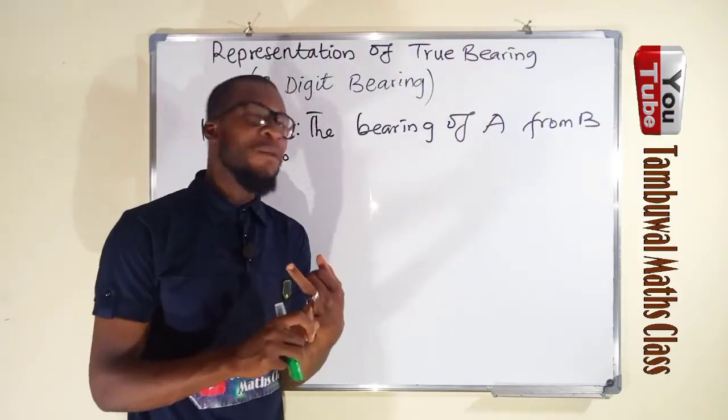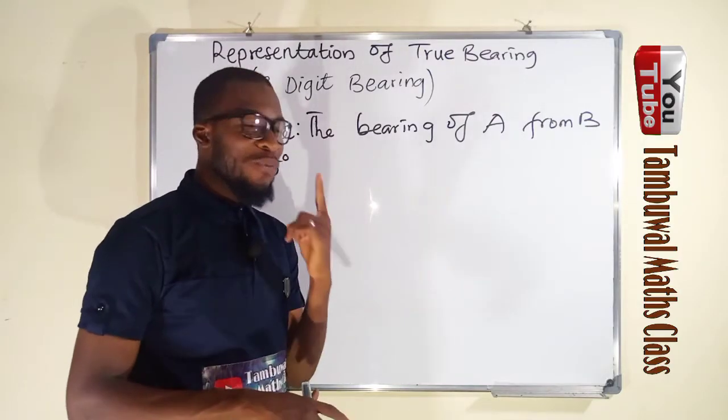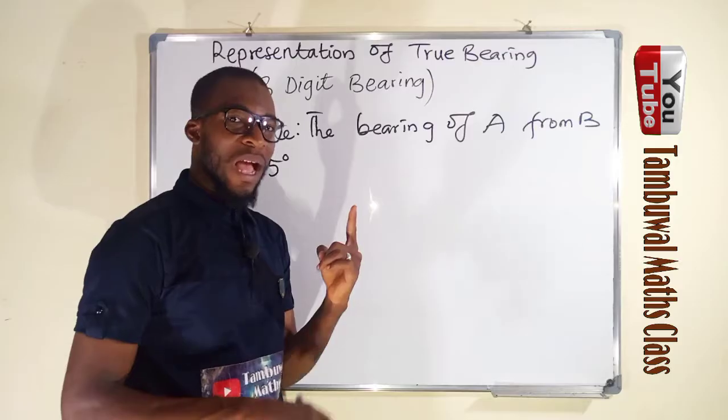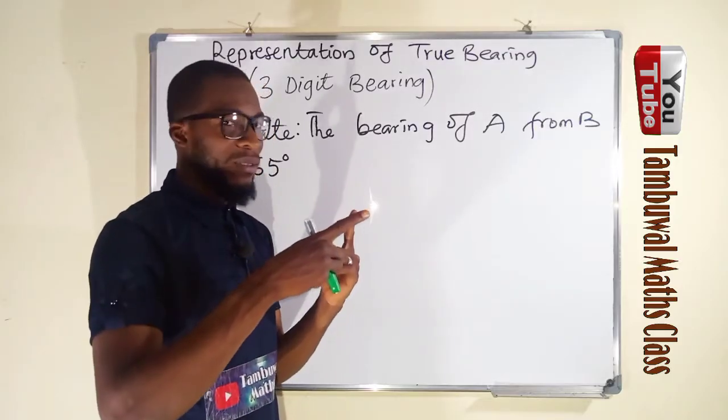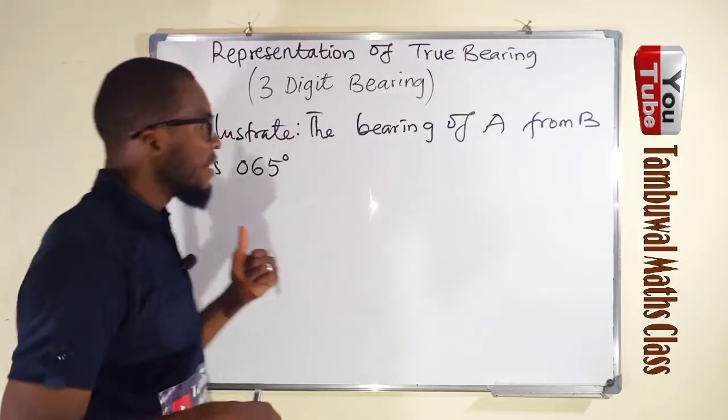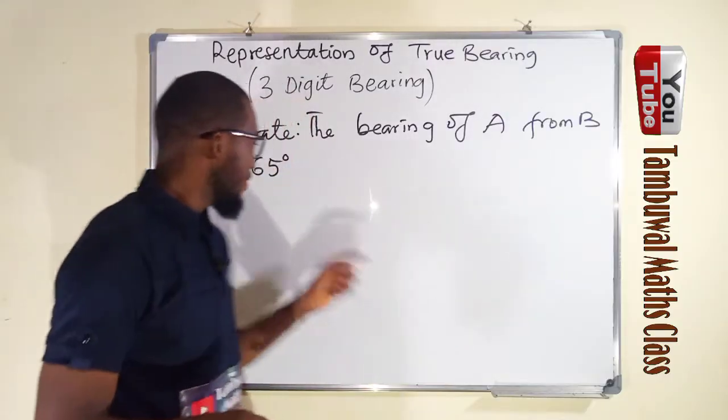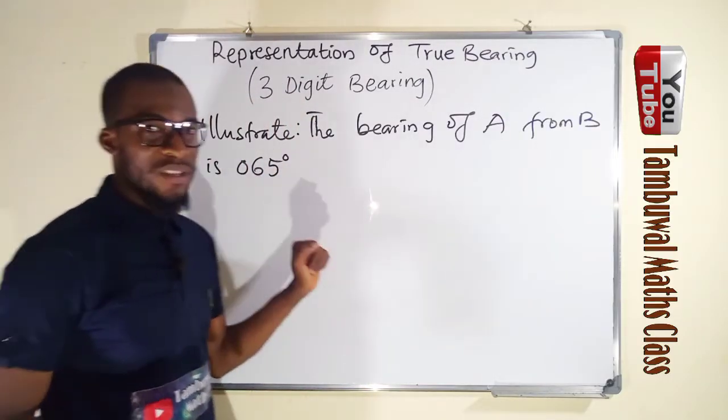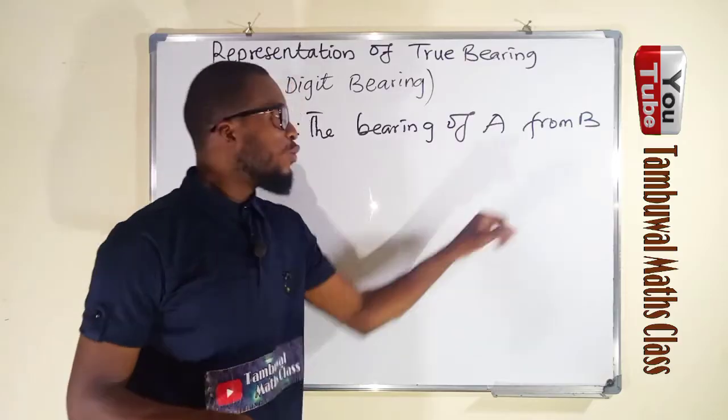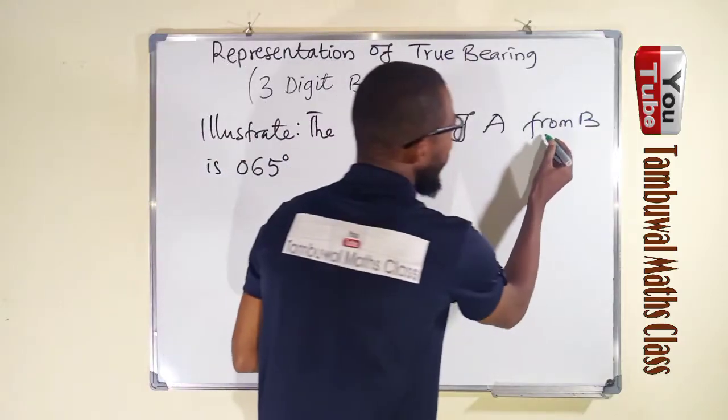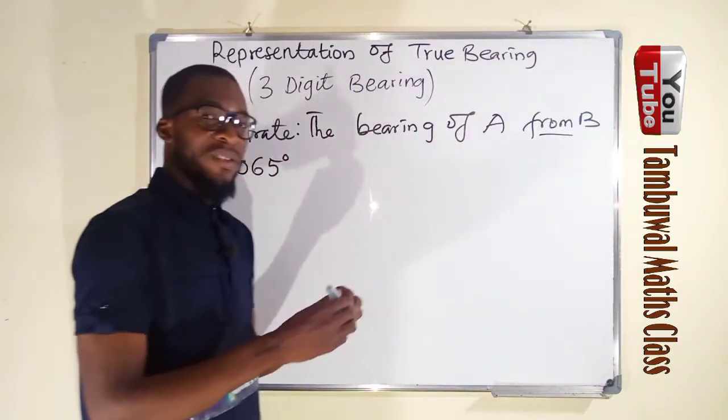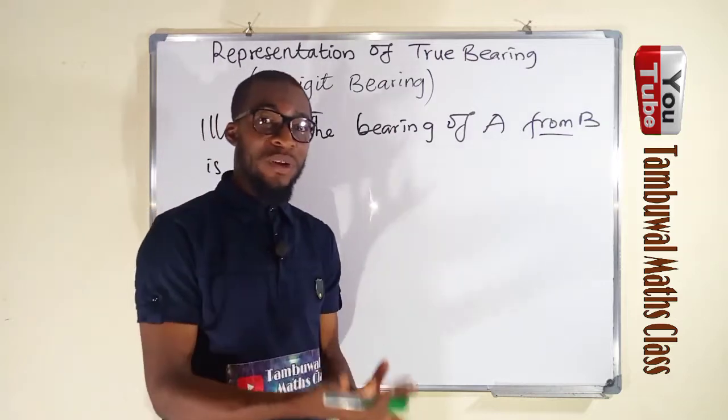The bearing of A from B is 065 degrees. Remember number one, we said every angle is measured from the north. And it must be clockwise. All angles are written in three digits. You can see one, two, three. This is three digits.